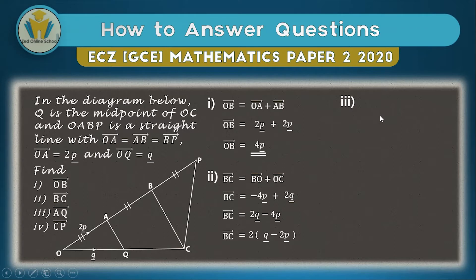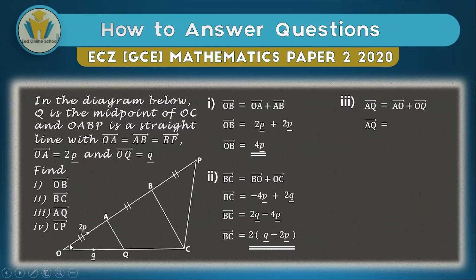Question three asks us to find AQ. AQ is part of a triangle, so we use the triangle of addition again. AQ equals AO plus OQ. Going in direction AO gives us the negative of OA, so it becomes minus 2p plus q. This is already in simplest form — we just put the positive vector before the negative one and we're done.